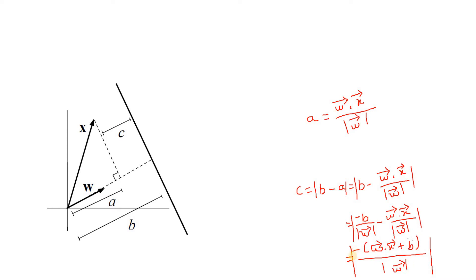As this is mod, we can ignore this minus sign. Here in the denominator, mod is already present, so we can restrict the mod in the numerator only. We have derived the distance between a point and the hyperplane is omega vector dot x vector...